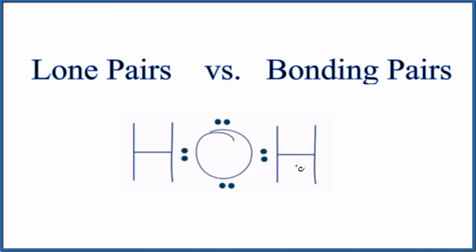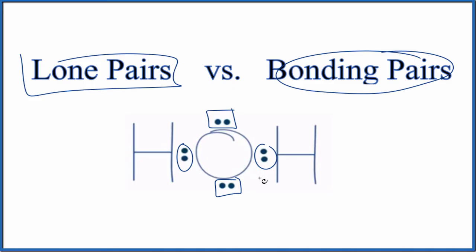So remember, bonding pairs, they're between atoms. They're forming the chemical bonds. Lone pairs, or unshared pairs of electrons, non-bonding electron pairs, they are by themselves. So we have our lone pairs and our bonding pairs of electrons. But what do you think the molecular geometry here will look like, since we have two lone pairs?